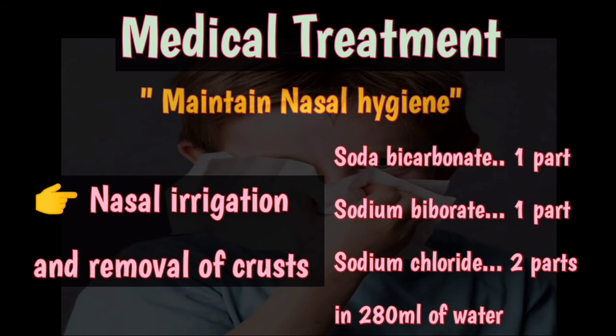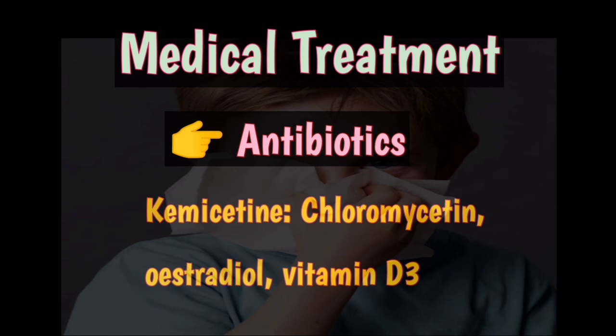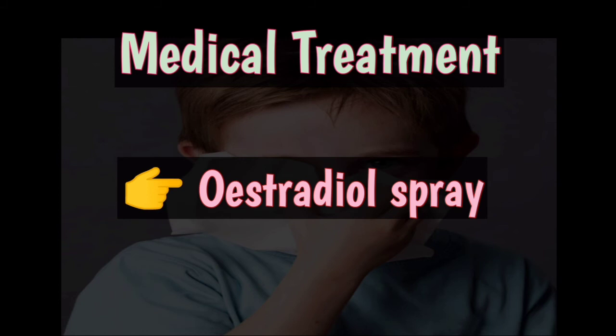Hard crusts may be difficult to remove by irrigation; they are first loosened and then mechanically removed with forceps or suction. Twenty-five percent glucose in glycerin inhibits the growth of proteolytic organisms responsible for the foul smell. Antibiotics are given after nasal irrigation; a chemicetine solution containing chloromycetin, estradiol, and vitamin D3 may be useful in treating the underlying infections. Estradiol spray helps to increase the vascularity of nasal mucosa and regeneration of seromucinous glands.